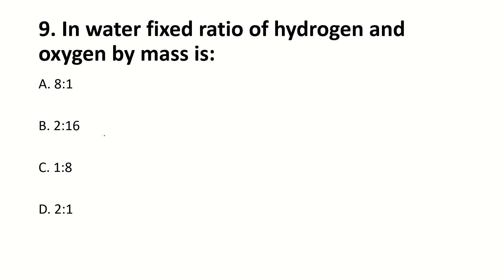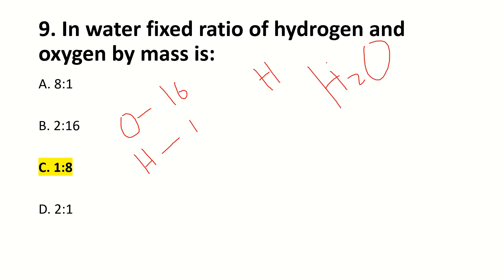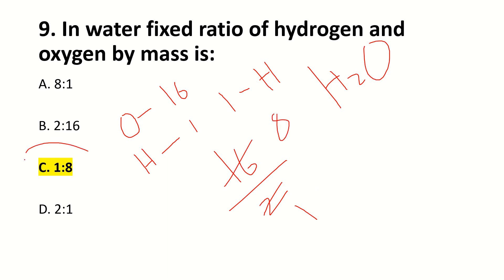In water, the fixed ratio of hydrogen and oxygen by mass is dash. The right answer is C: 1 ratio 8. Oxygen is 16 and hydrogen is 1. In H2O there are 2 hydrogens, so hydrogen mass is 2. Divide by 2 gives 1, and oxygen is 16 divided by 2 gives 8. So the ratio is 1:8 for hydrogen to oxygen, or 8:1 for oxygen to hydrogen.